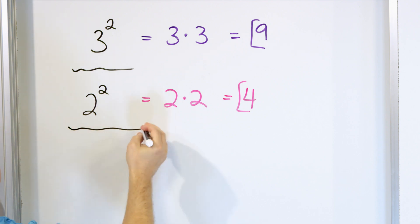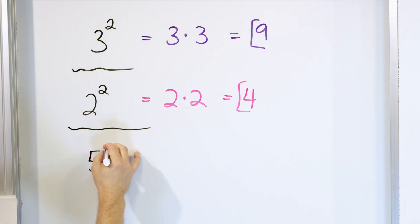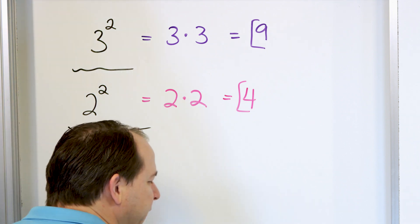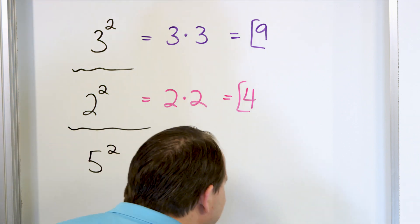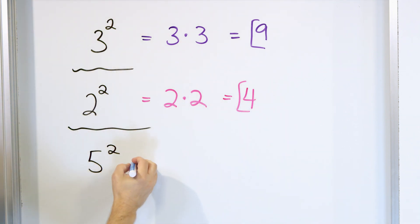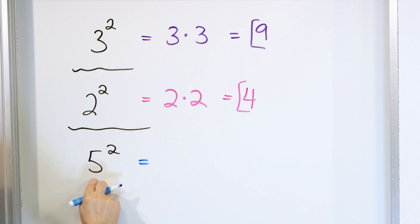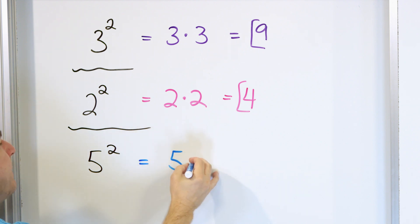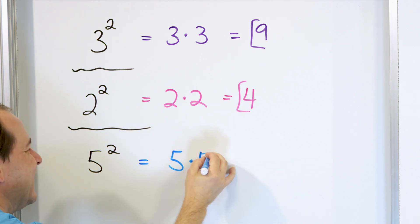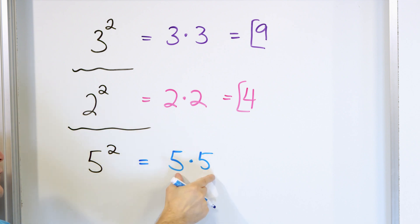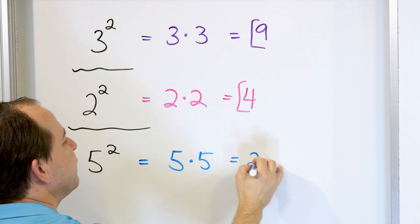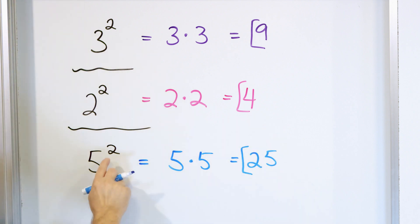Let's take a look at another power of 2: 5 to the power of 2. We're always multiplying by itself. So it's 5 multiplied by itself. The number of times we multiply by itself is what the exponent is, and 5 times 5 is 25. So we say that 5 to the power of 2 is 25.